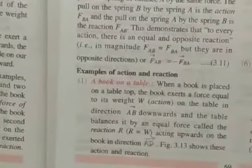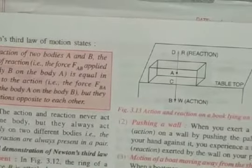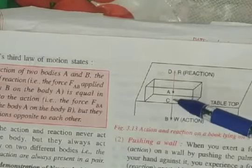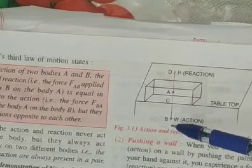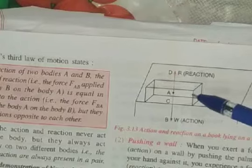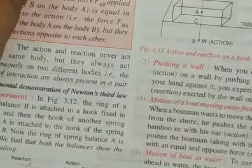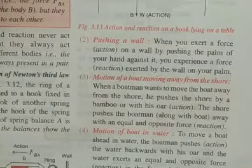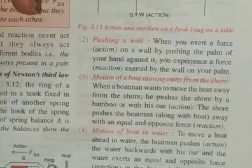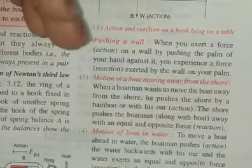Let us see various other examples given in your book. First: a book on a table. This is a book placed on a tabletop — the weight of the book is acting downwards. This is the action, acting in the direction AB, and the reaction is the tabletop exerting a force on the book upwards. Then, pushing a wall: if you try to push a wall, you exert a force on it. In return, the wall exerts a force on you, and you can observe some stretch or pull in your muscles — that is the reaction of the wall on your palm.